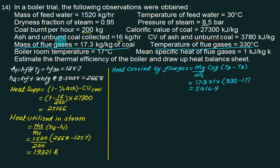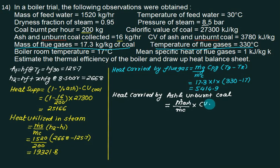Heat carried by ash and unburnt coal. Check: is it also given as 16 kg? Yes. Mass of ash divided by mass of coal multiplied by calorific value of unburnt coal. Mass of ash is 16 divided by 200, and the calorific value is 3780 kJ/kg.